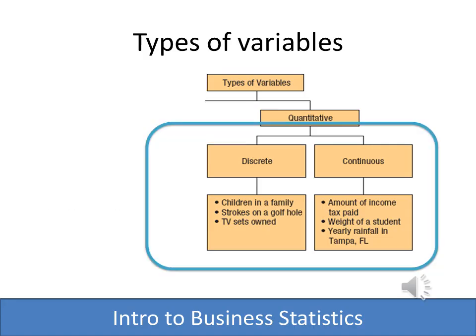Quantitative variables can be broken down into two different categories: discrete and continuous. Discrete variables are essentially whole numbers — children in a family, TV sets owned. You can't have one and a half kids. Continuous, on the other hand, can be any value — the weight an individual has could be 1.2 pounds or 1.3 pounds, or the amount of air in a tire, or the amount you paid in income tax. It is important to understand the difference: discrete means a whole number, continuous means any value within the range.